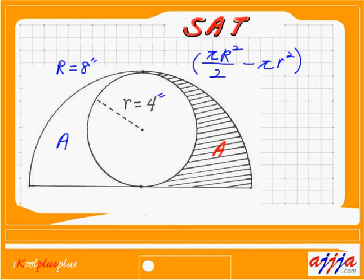Almost done. Big radius: that's right, 8 times 8 equals 64π, divided by 2 which is 32. So 32π, that's it. Now small r: π r squared, 4 times 4 equals 16π. Minus 16π, that's it.